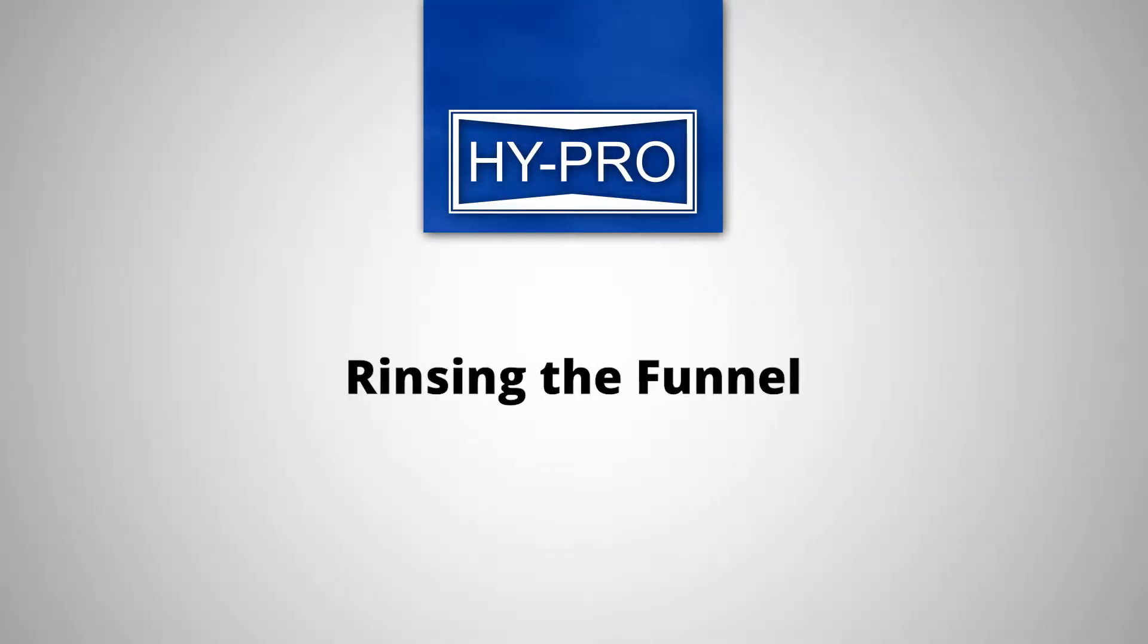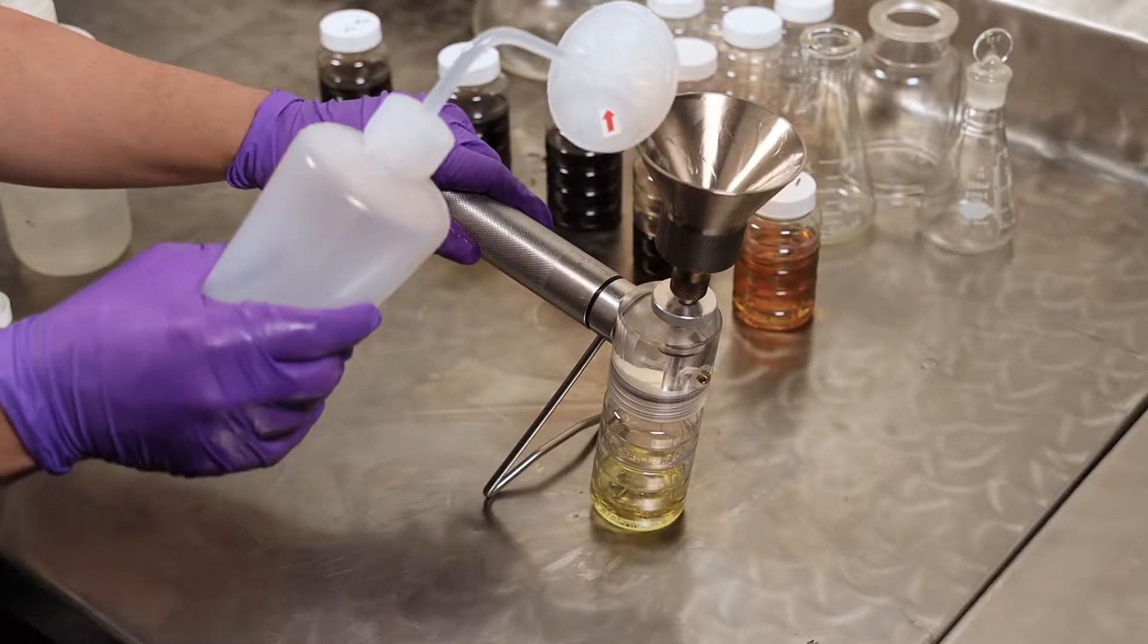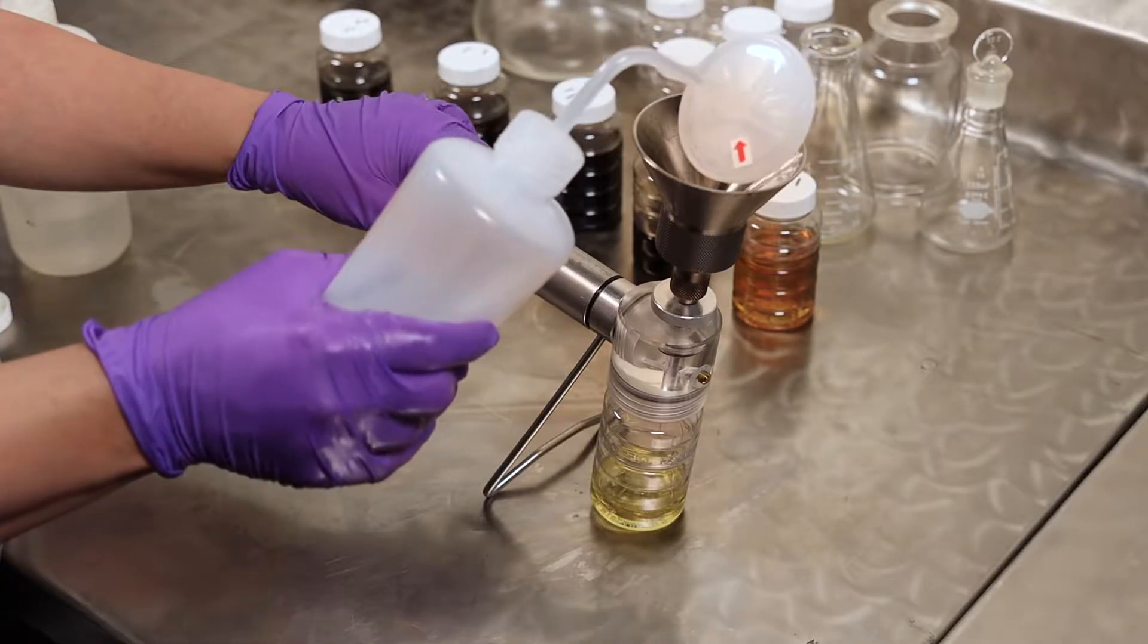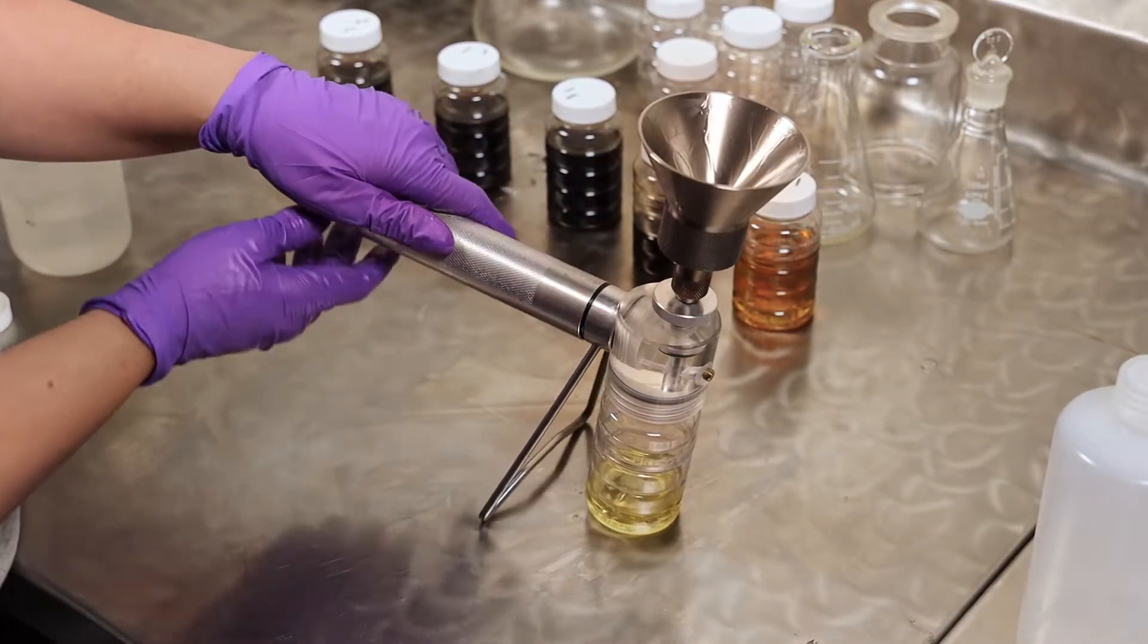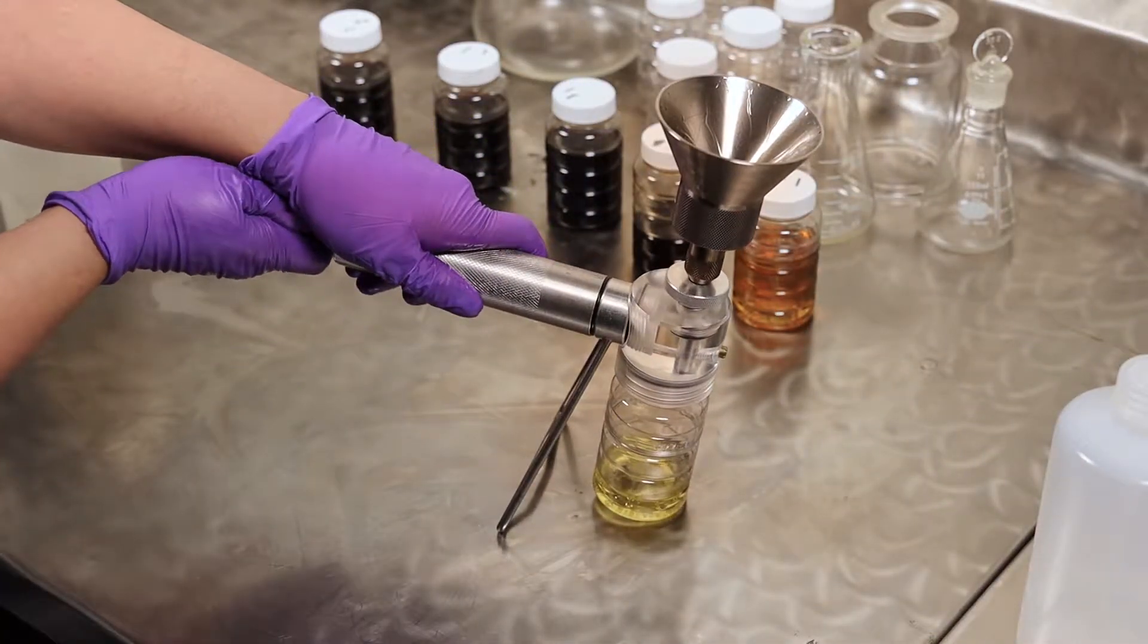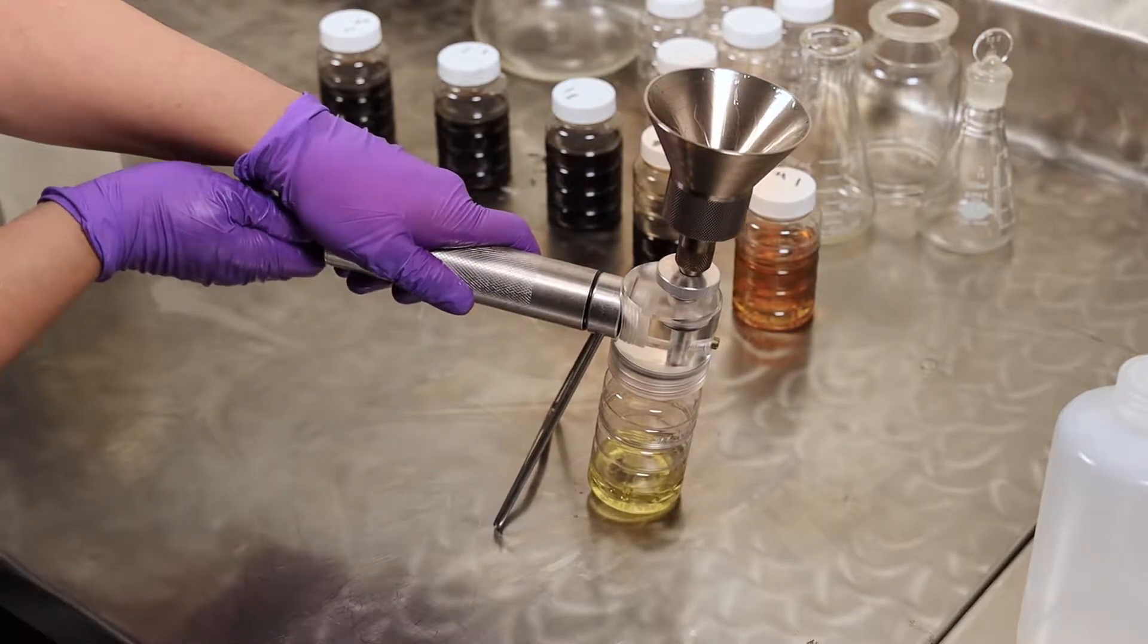Rinsing the funnel. Once the entire sample has passed through the patch, rinse the funnel with filtered solvent and draw through the patch by again grasping the vacuum pump firmly and pulling the handle slowly to the rear. Continue to pull air through until the patch starts to dry.